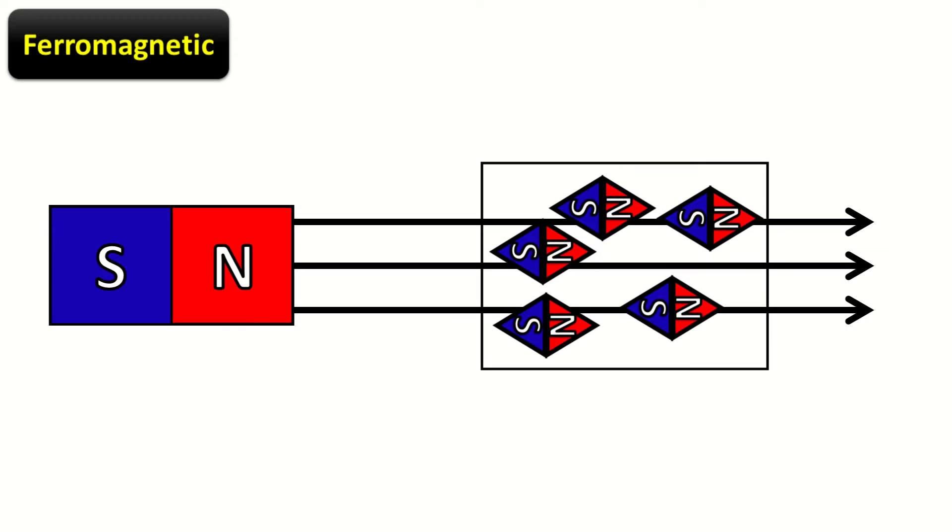Ferromagnetic are materials that have a high tendency to align their magnetic dipoles with external magnetic fields. Due to this property, they form a path for the magnetic fields and are attracted to their source.